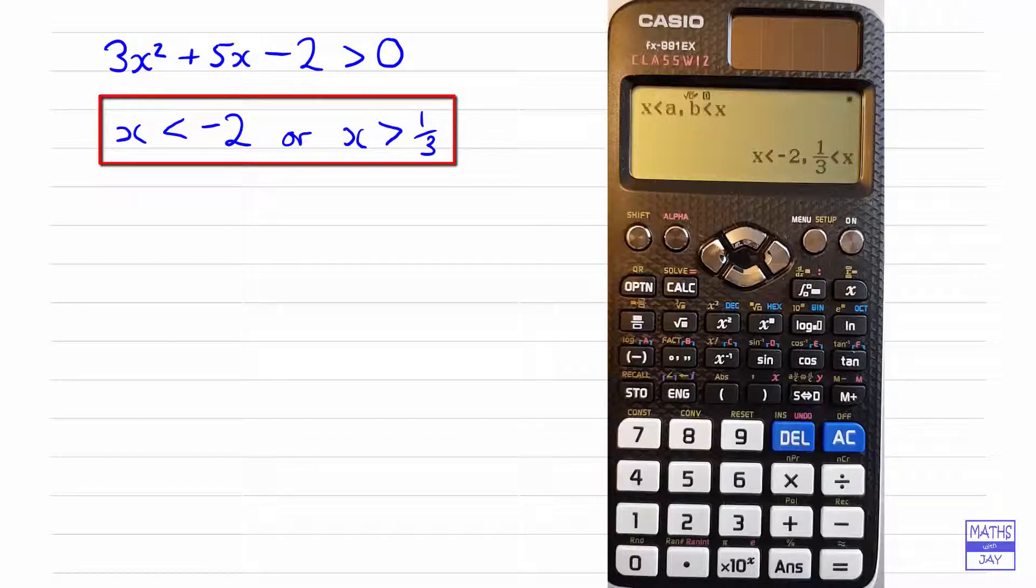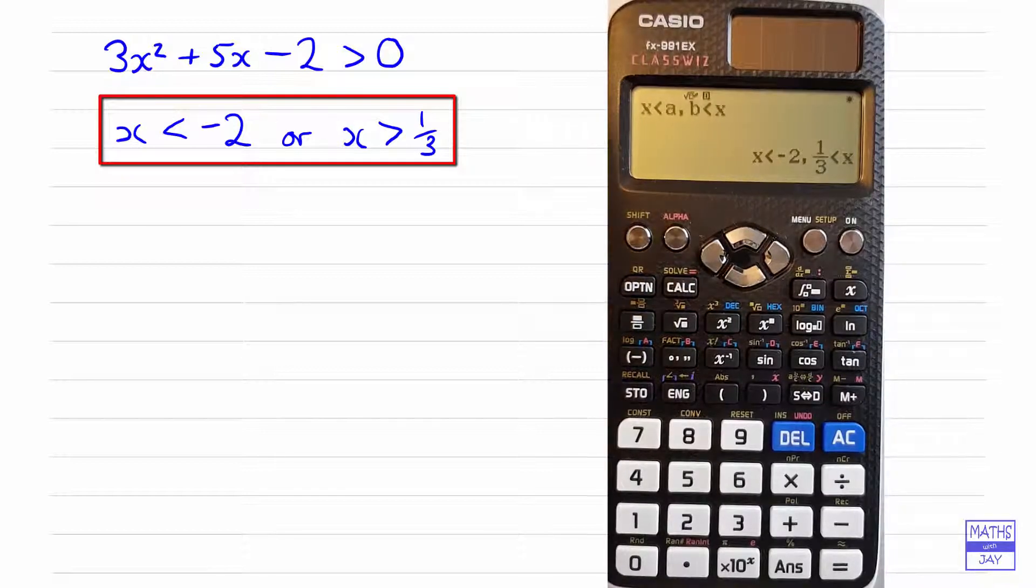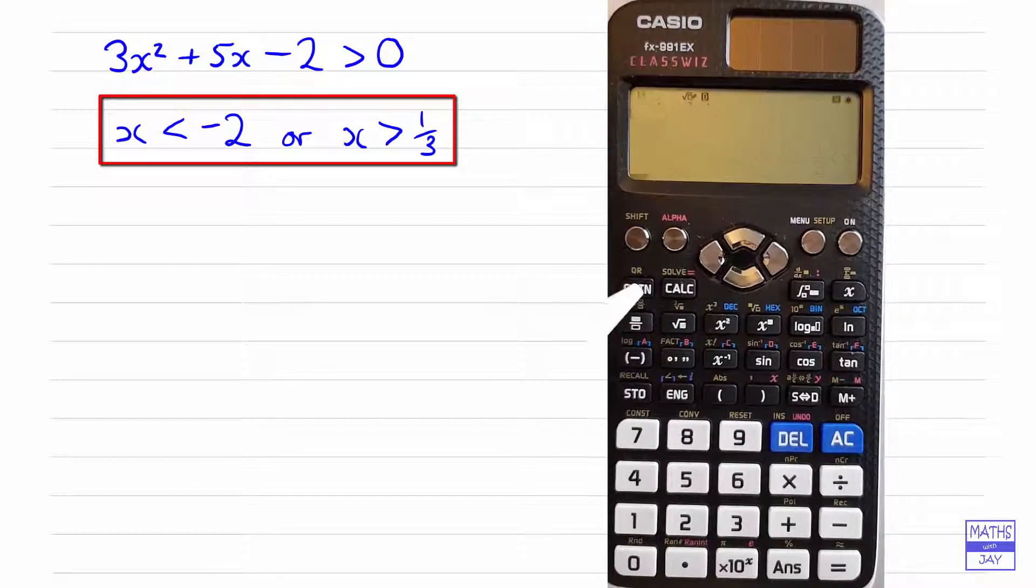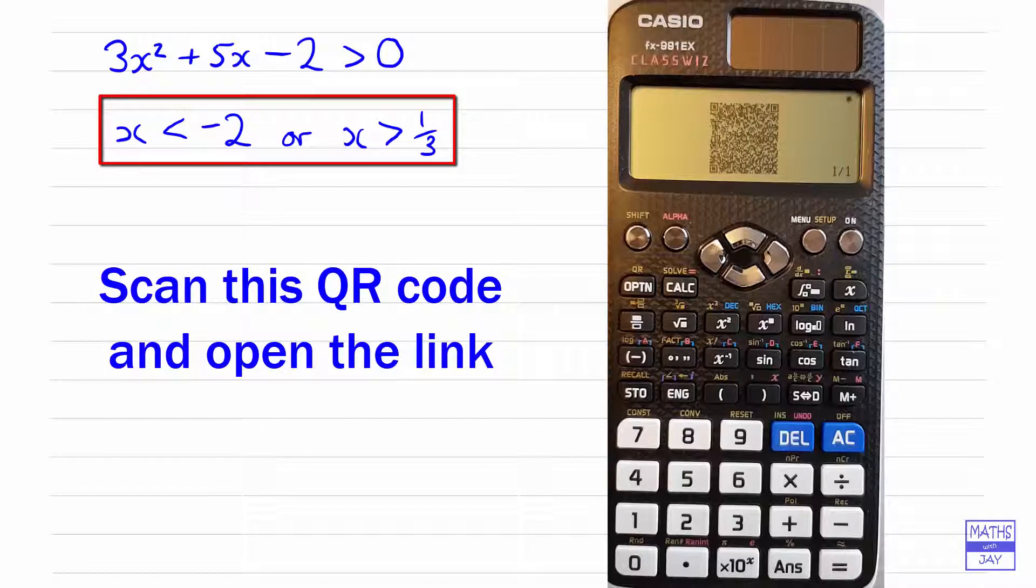Right, now let's have a look at what we can do if we can use the QR code. So we would press shift and QR, and then what you'll do is get your mobile or your tablet to input that QR code, and that will take you to a link.